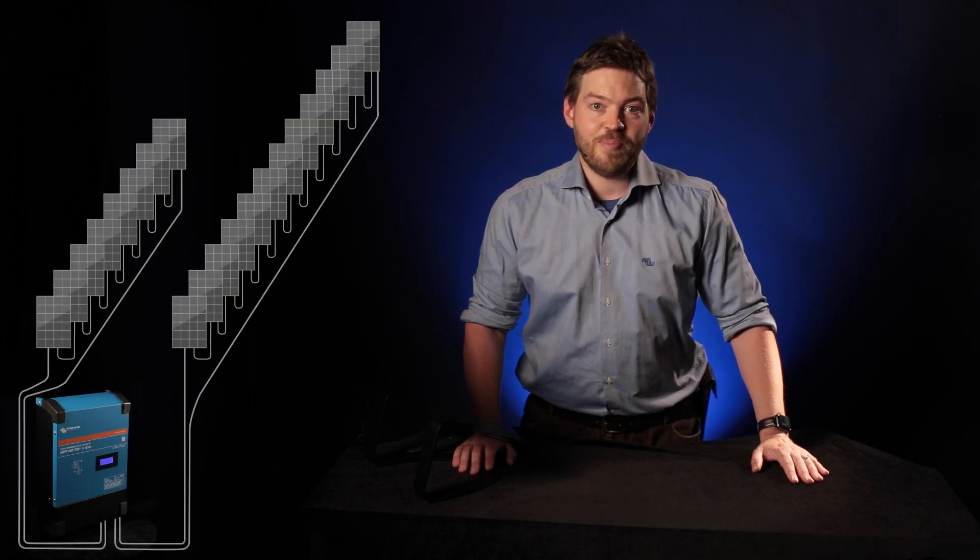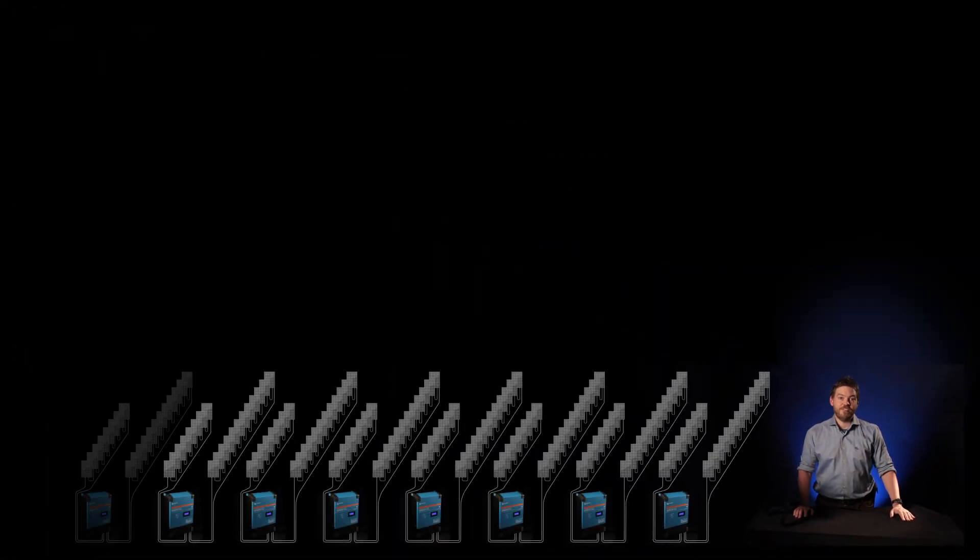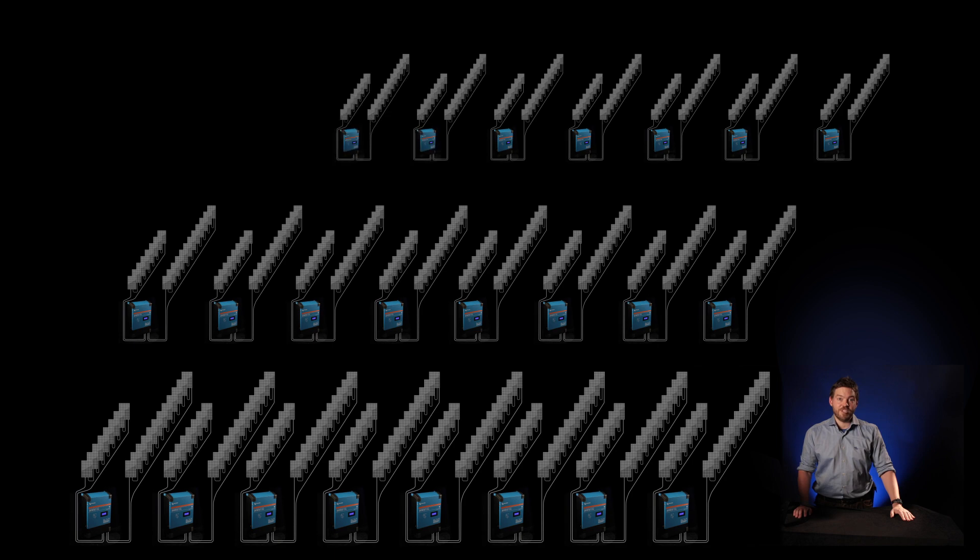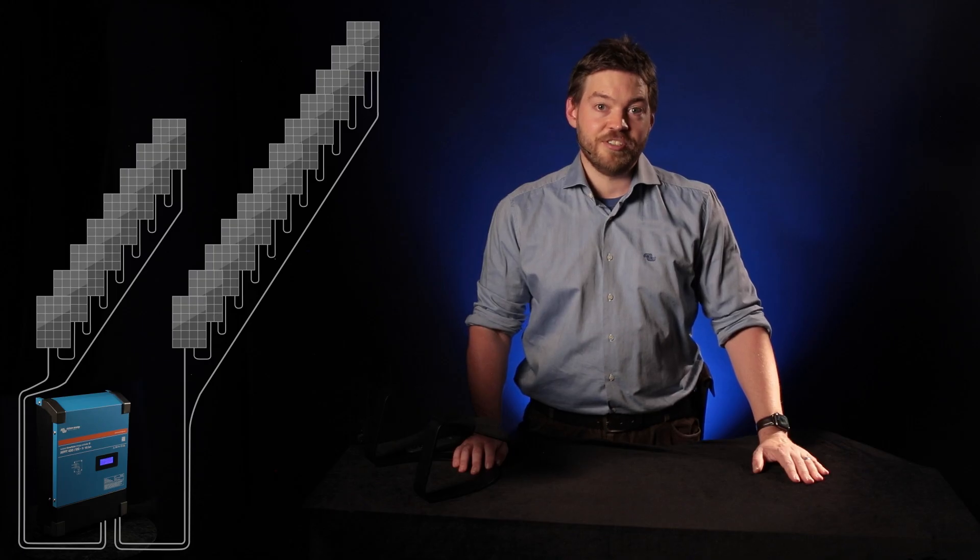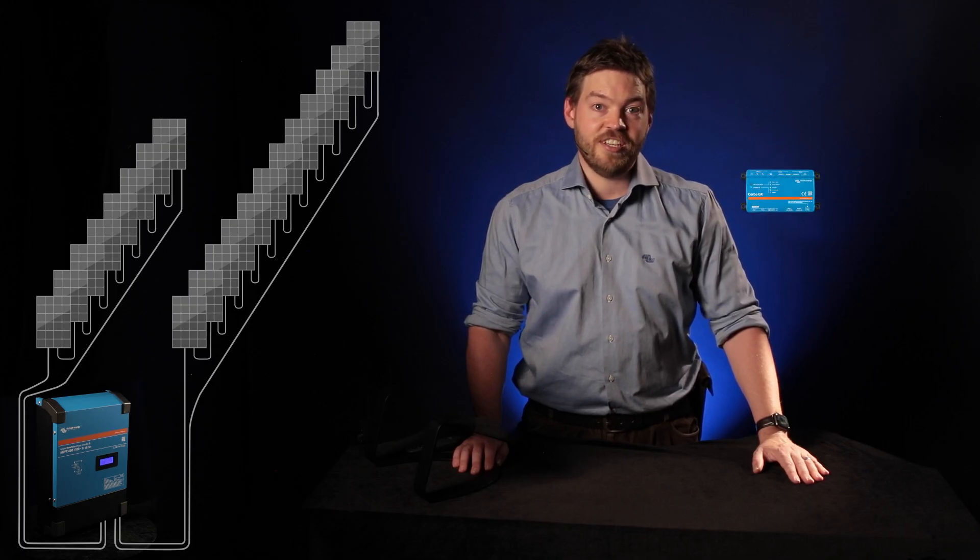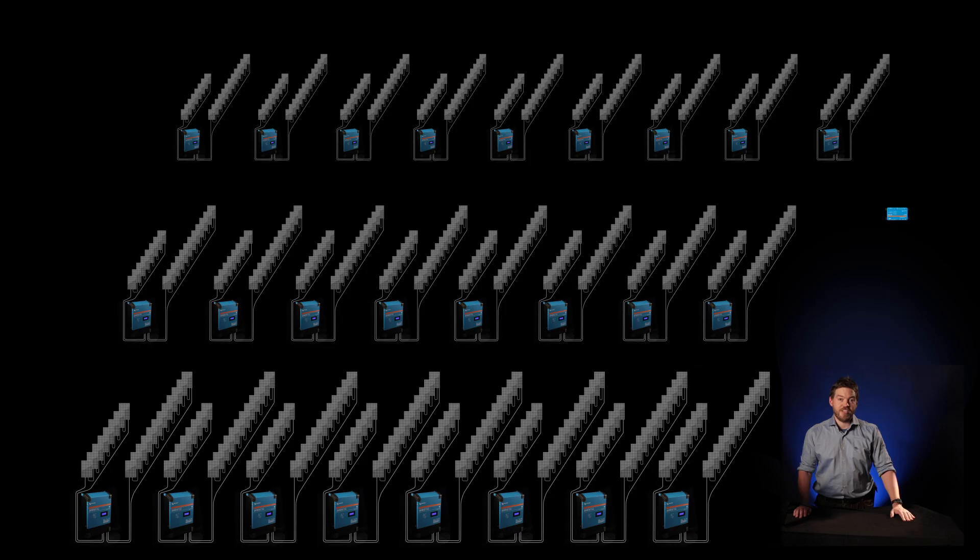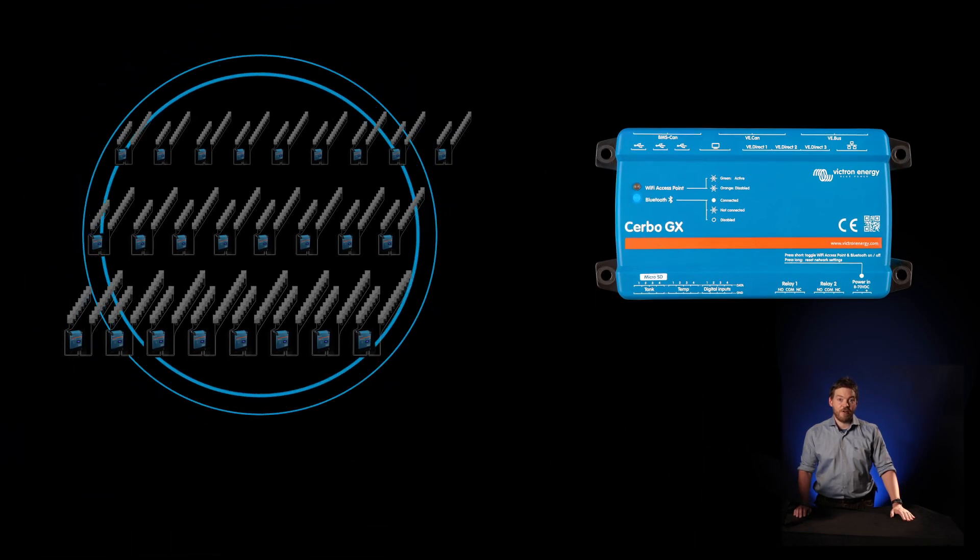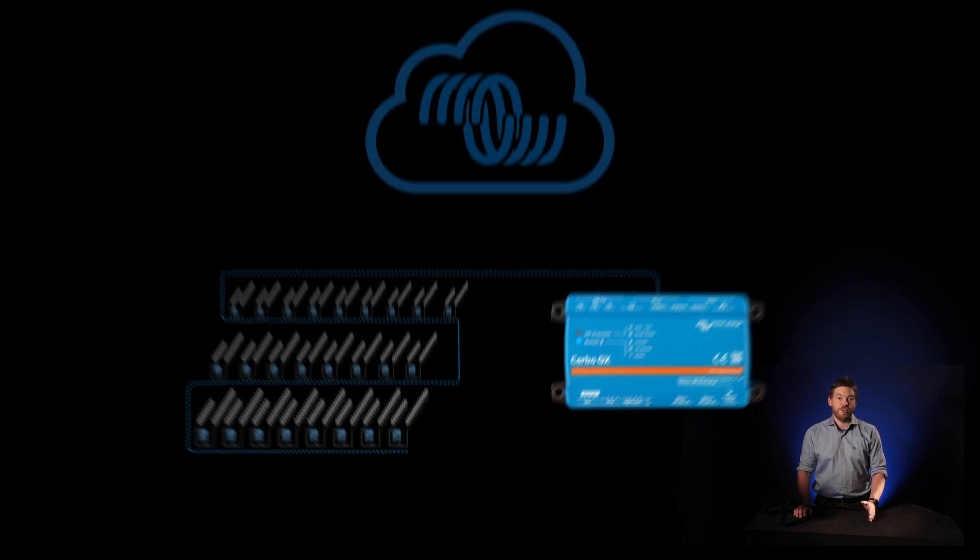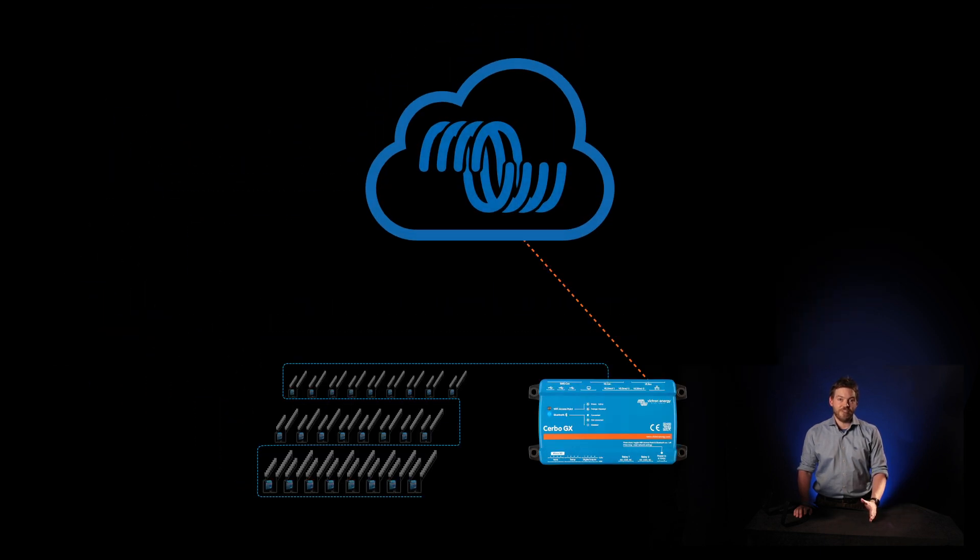The MPPT RS has all the usual Victron connectivity options. It's a smart unit so it comes with built-in Bluetooth. This means you can connect using the Victron Connect app. It also contains VECAN ports. These VECAN ports allow you to connect up to 25 units in parallel and have them synchronize. You can also connect these into a GX device to take those 25 MPPTs up to 125 kilowatts of power and communicate all that through to the Victron remote management portal VRM.